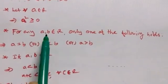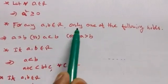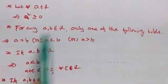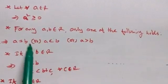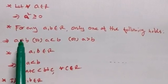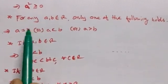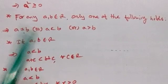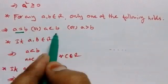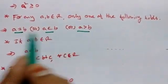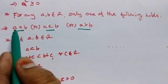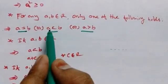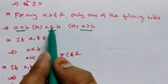For any element A belonging to the real numbers, only one of three conditions holds: A is positive, A is negative, or A equals 0. For any two real numbers A and B, exactly one of the following is true: A equals B, A is less than B, or A is greater than B.